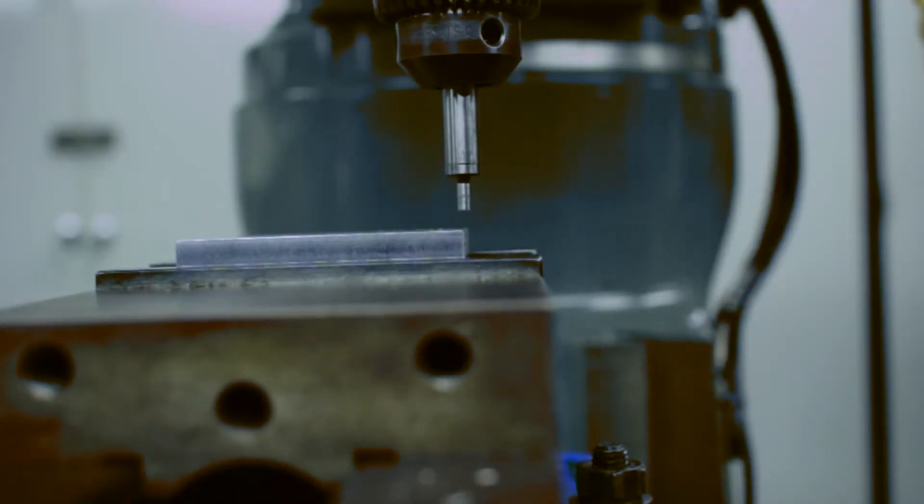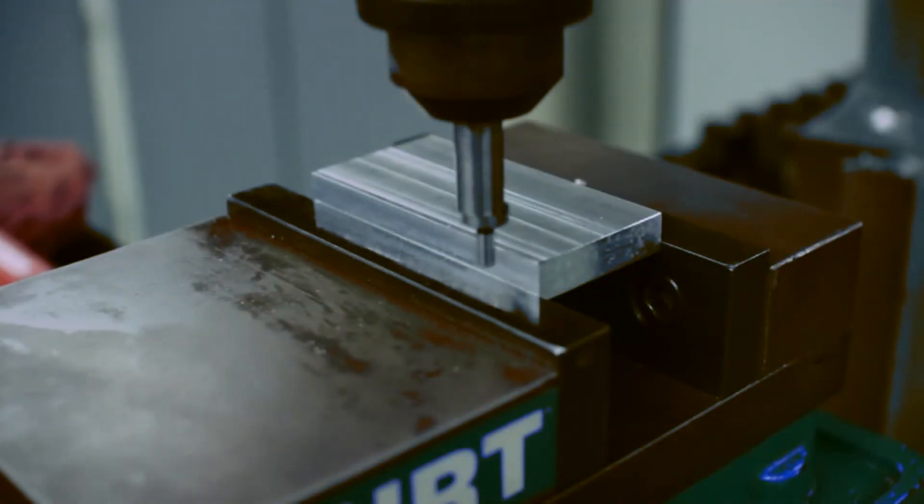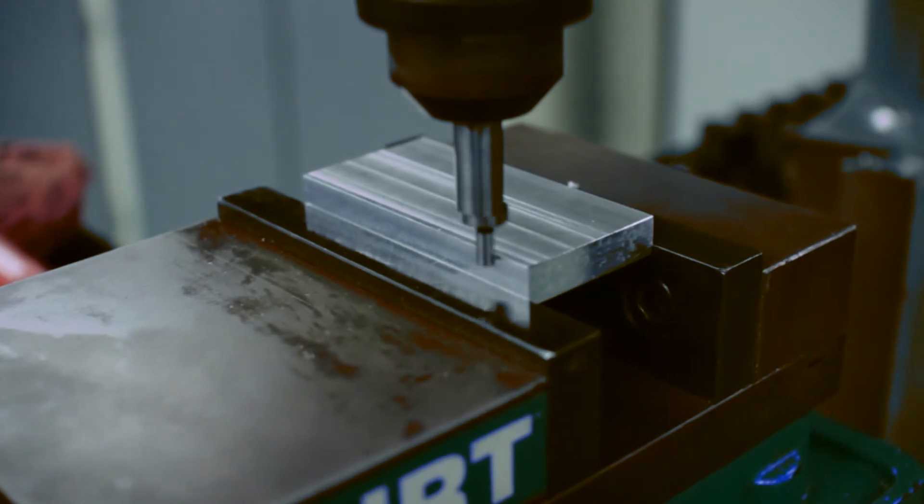We offset our tool a hundred thousandths of an inch because it moves our zero to the center line of the spindle. Repeat the same steps for the Y axis.